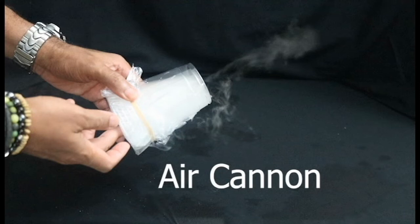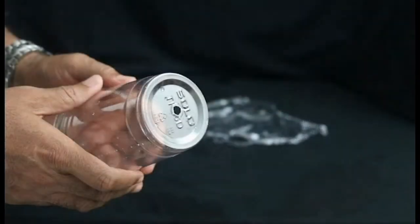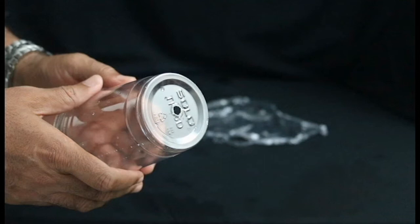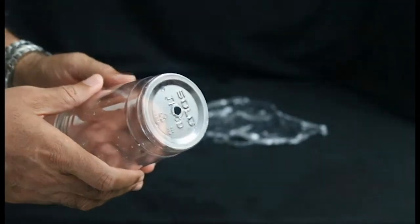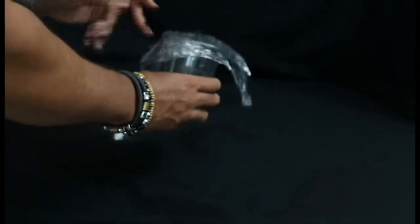For this last activity, air cannon, we're going to need two cups, one half filled with water and the other with a hole in the bottom as seen here. You'll also need one film of plastic wrap, a rubber band, a pair of gloves and dry ice.